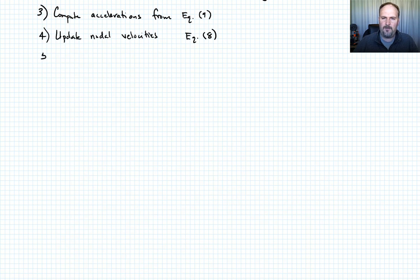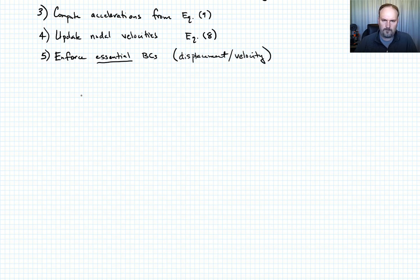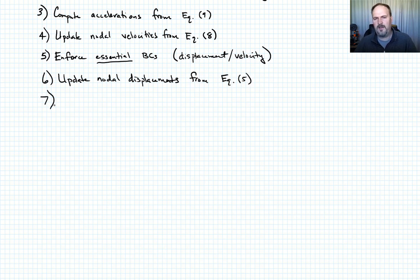Now at this stage, in step five, we're going to go ahead and enforce any essential boundary conditions. So that's going to be on anything that's on displacement or velocity. Then we can go ahead and update the nodal displacements, and that'll be from equation five.